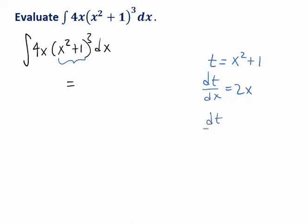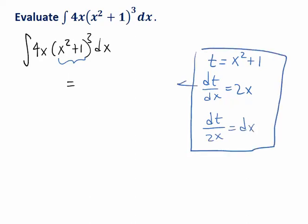Let's see how that works out. So I could isolate the dx here, and now use all of this to make my substitution. So we have the integral of 4x. Instead of x squared plus 1, I can write t, so that's t cubed. And instead of dx, I can write dt over 2x.